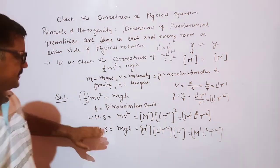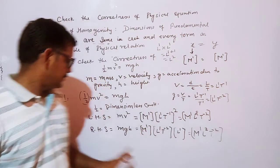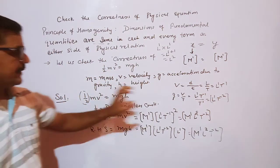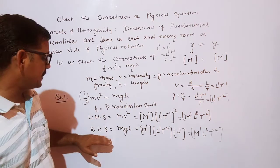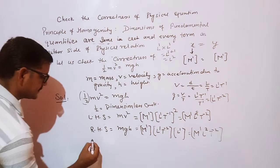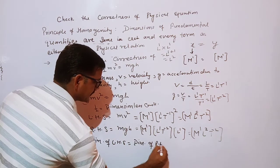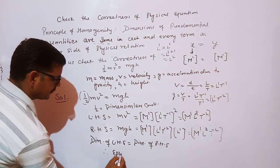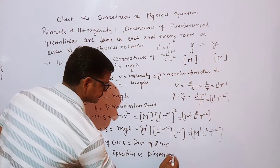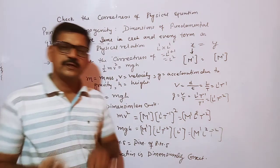Comparing both sides: the dimensions of the left hand side are M power 1, L power 2, T power minus 2, and the dimensions of the right hand side are also M power 1, L power 2, T power minus 2. Since the dimensions of the left hand side are equal to the dimensions of the right hand side, the equation is dimensionally correct.